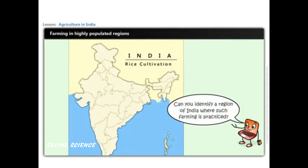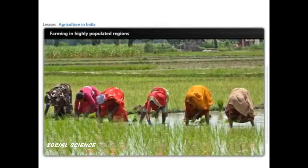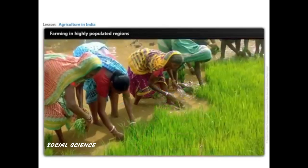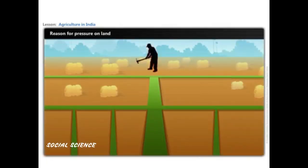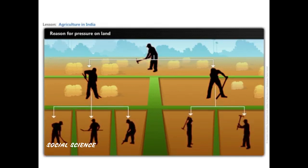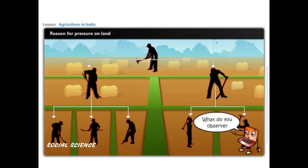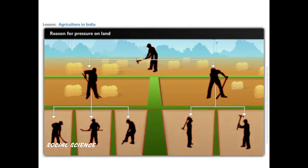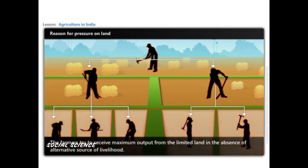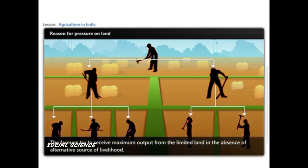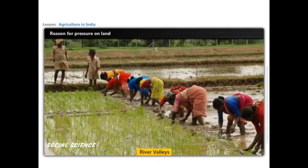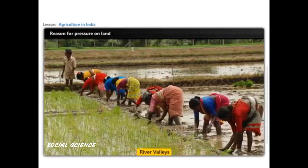This type of cultivation exists in the rice-growing Gangetic basin in India, where there is a huge population pressure on land. The right to inheritance leads to division of land in successive generations, resulting in uneconomic land-holding size. Farmers try to receive maximum output from limited land in the absence of alternative sources of livelihood. As human population grew in major river valleys, intensive farming methods became necessary to meet the carrying capacity of the environment.